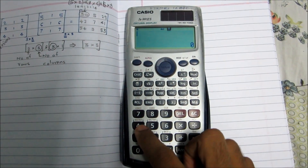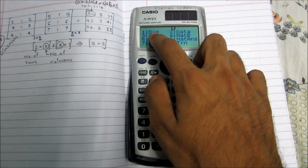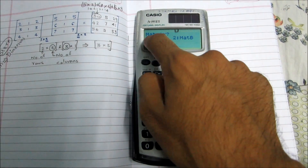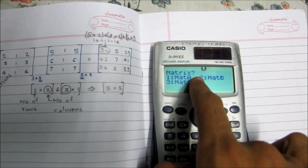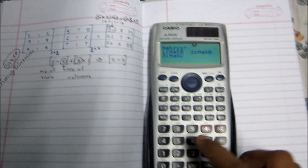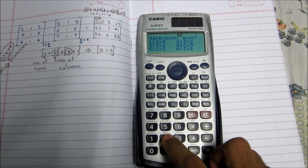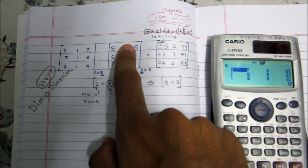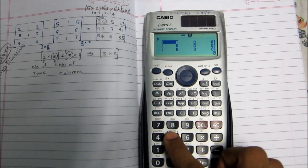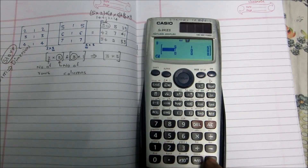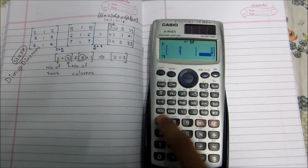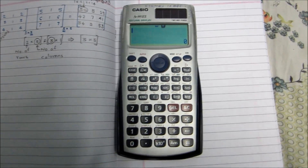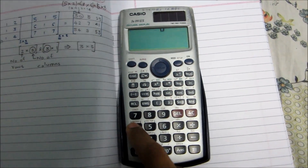Now we'll store the second matrix. Press Shift, then 4, then Dim. We've stored Matrix A; now we will store this matrix into Matrix B. Select 2 for Matrix B. The dimension is three-by-three, so select three-by-three and then enter the same matrix data. Press AC once stored.